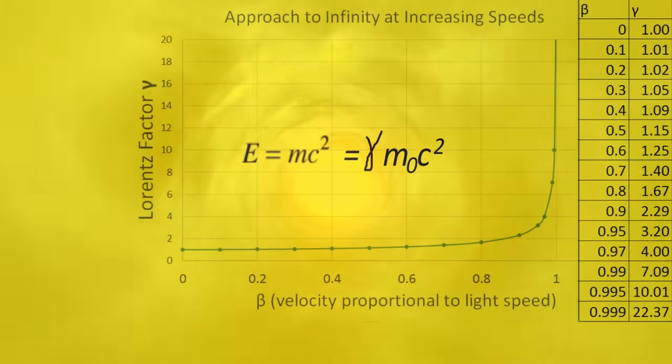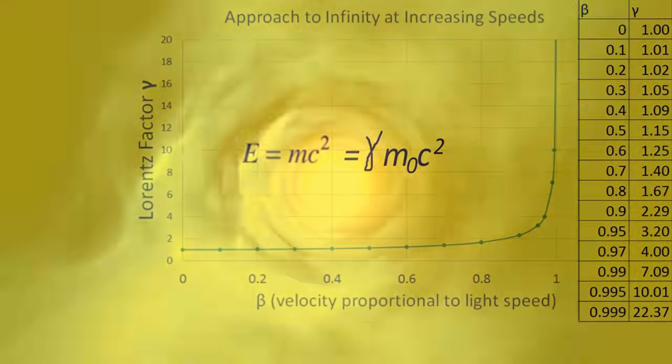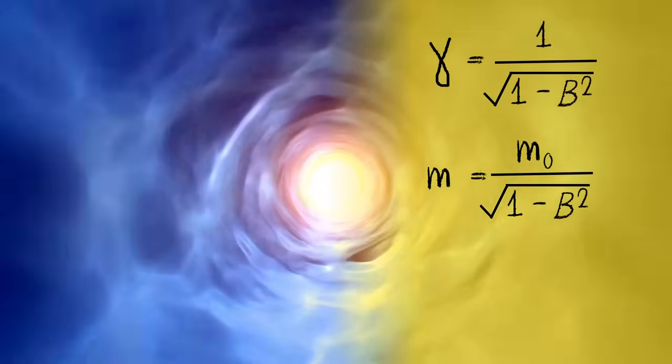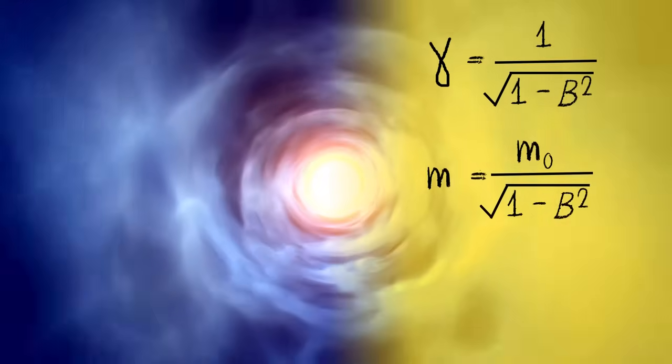Of course if anything started off with a speed to begin with, like our tachyons, they wouldn't need infinite energy to get there, same as photons don't need infinite energy to be at the speed of light since they have no rest mass. This is where our imaginary mass comes into play.